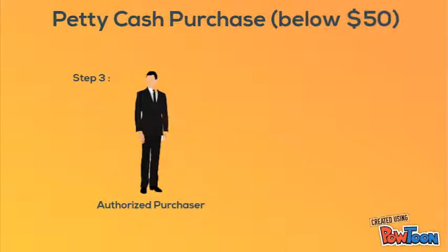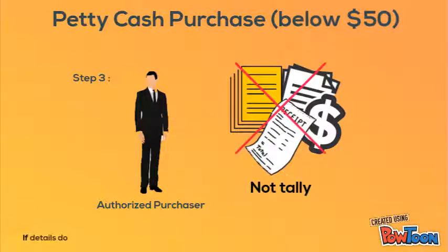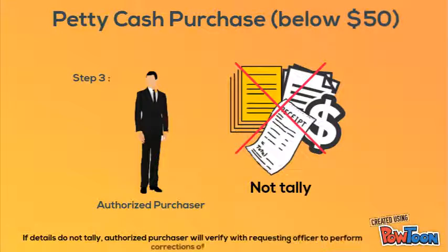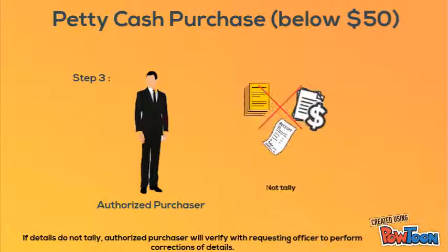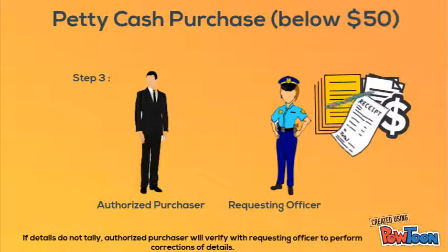Step 3: Authorized purchaser checks details on the purchase request with the reimbursement form and official receipt. If details do not tally, the authorized purchaser will verify with the requesting officer to perform correction of details.